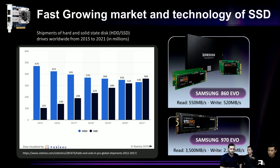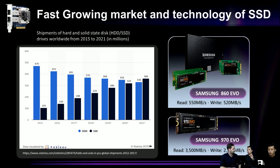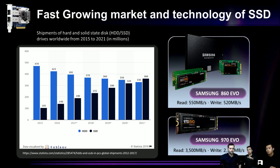That's because the performance of SSD is getting better and better, and most importantly the price is going down, so more and more people can use SSD. We have two examples on the right — the Samsung 860 EVO and the Samsung 970 EVO — and you can see the performance: read is over 500 megabytes per second and write is also around 500 megabytes per second.